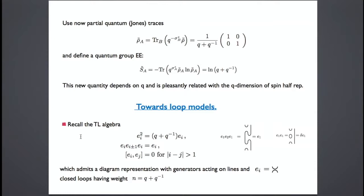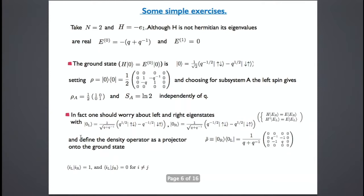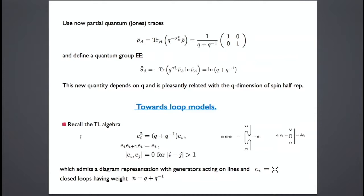Let's talk about algebras and loops. Here is the Temperley-Lieb algebra, which is satisfied by this little generator. It's a projector algebra: e² = (q + q^{−1})·e, and there's a three-body relation e_1 e_2 e_1 = e_1. This algebra has a simple graphical representation. I want to move from laborious spins with q^{σ^z} to loops — that's what I call 'towards loop models'.